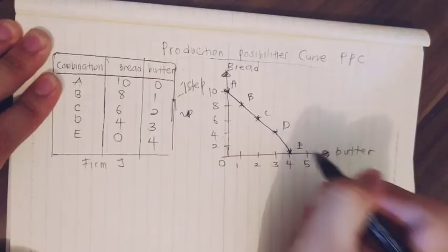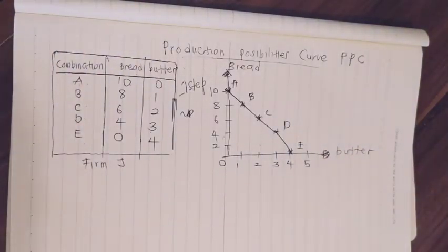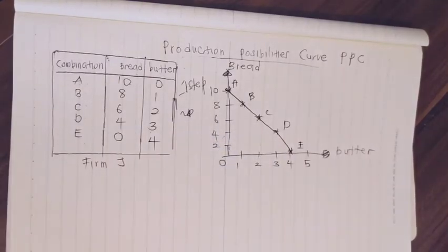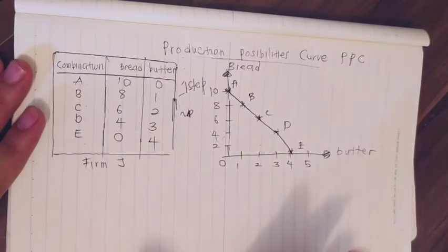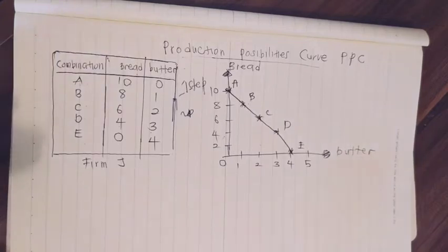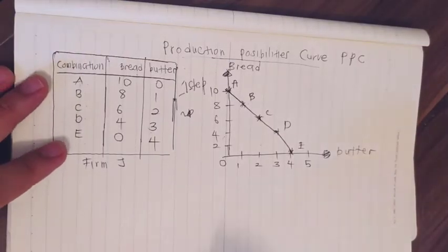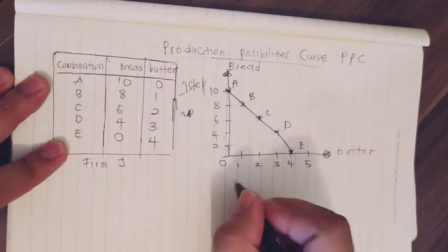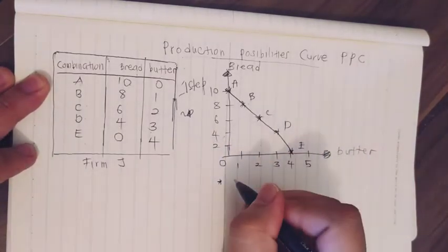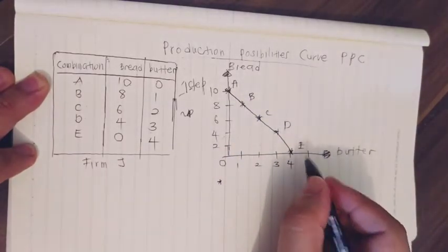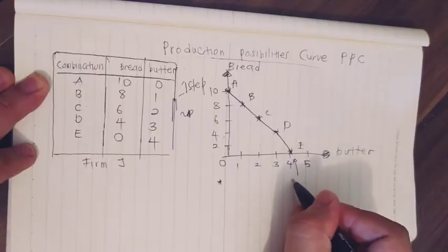We connect each point combination to form our Production Possibility Curve. The PPC provides several pieces of information. First, the curve itself shows what is known as efficient production — points that lie along the curve represent efficient use of resources.